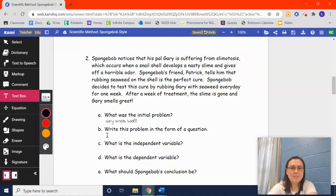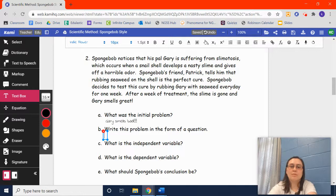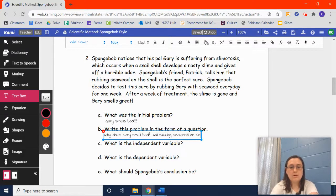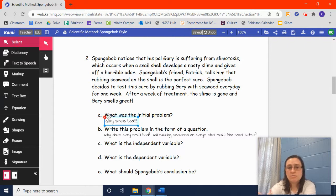Then, B, as I said before a million times, you usually write the problem as a question. So, how can we write this as a question? There are different ways you can write it. Yours may be different than what I put. But I'm going to say, one thing we can say is, why does Gary smell bad? We can say it later on. It says that SpongeBob's friend Patrick tells him rubbing seaweed on his shell would help him. So, our problem, our question could be, will rubbing seaweed on Gary's shell make him smell better? There could be different questions that you can come up with there. That's up to you.